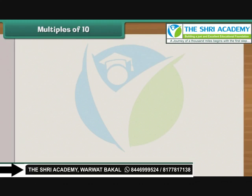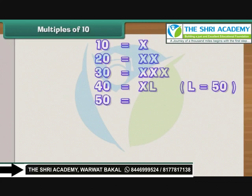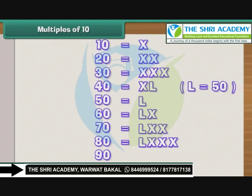Multiples of 10. We have seen that 10 is written as X and 20 as XX. By the same logic, 30 is XXX, that is 3 tens. 40 is read as 10 less than 50, hence it is written as XL, where L stands for 50. 50 is L. Similarly, 60 is LX, 70 is LXX, and 80 is LXXX. 90 is 10 less than 100, so it is written as XC, where C stands for 100. 100 is C.